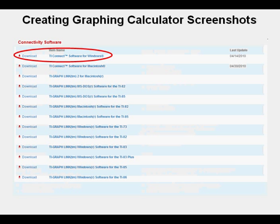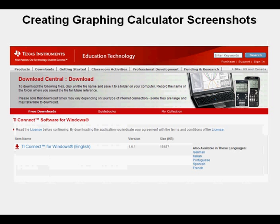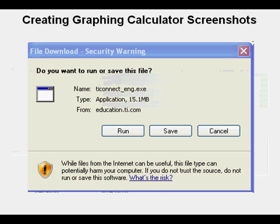Choose TI Connect software for Windows. Macintosh is also available. It brings you to this page. Click here to download. It takes you here to the file download dialog box.